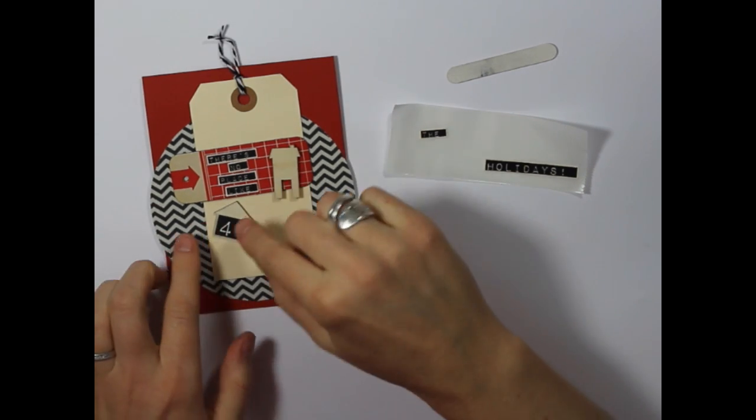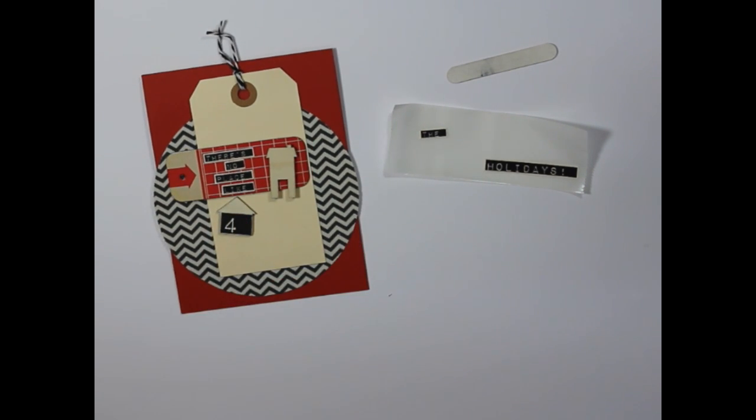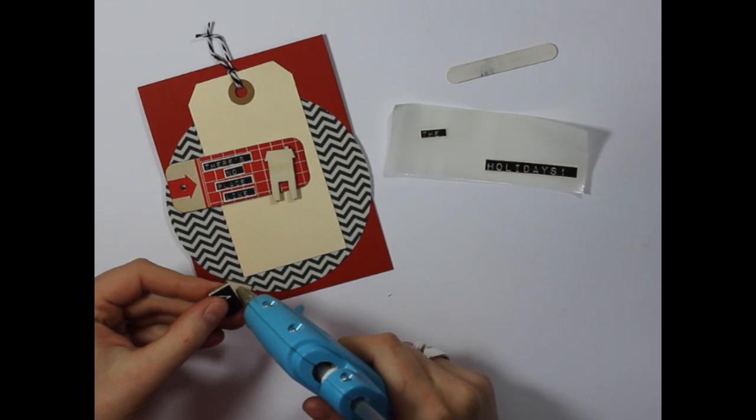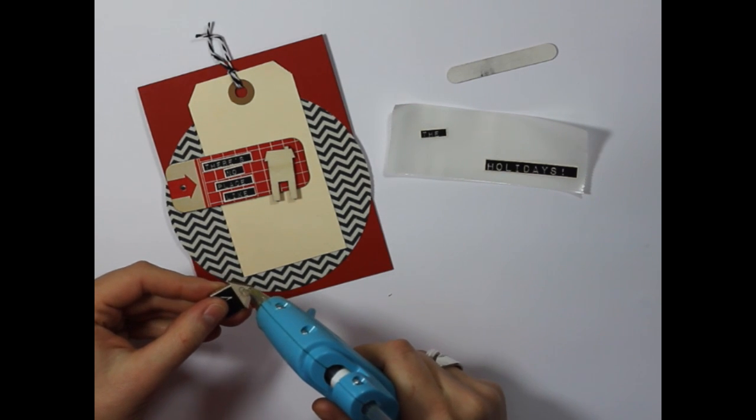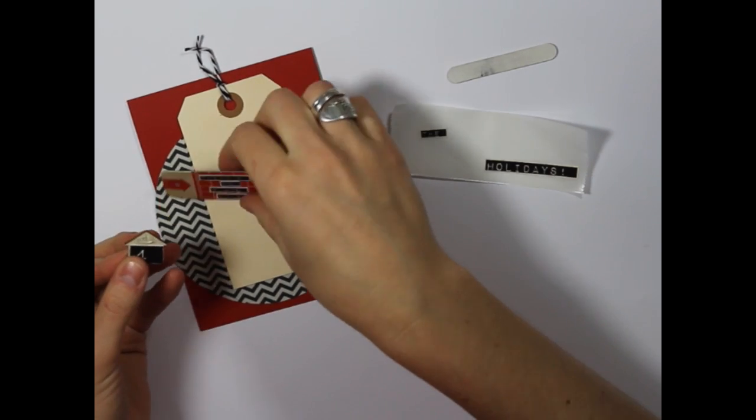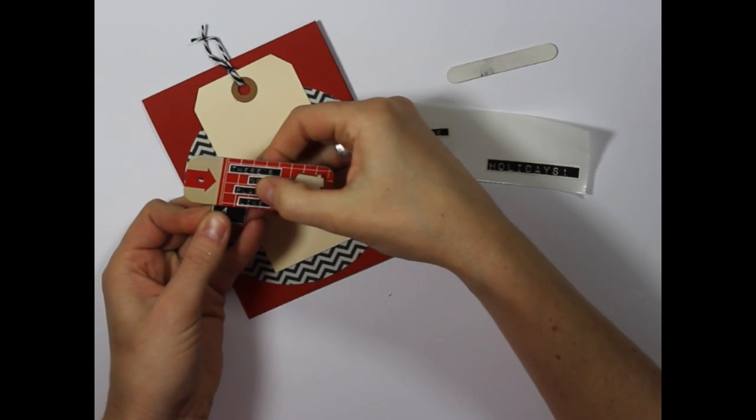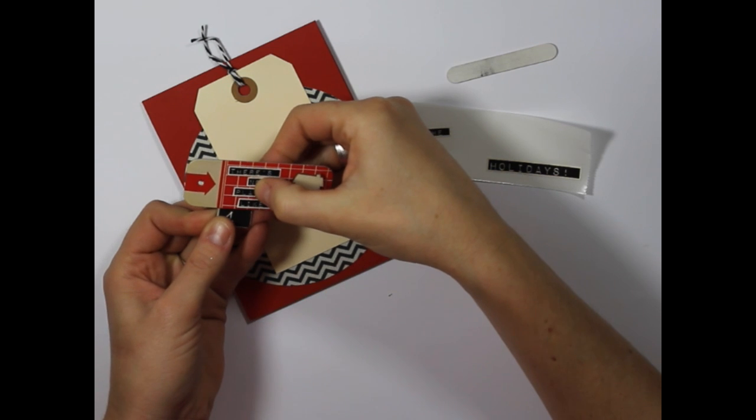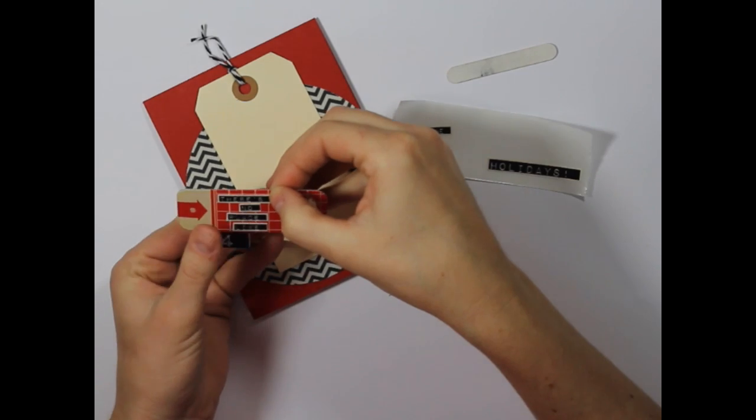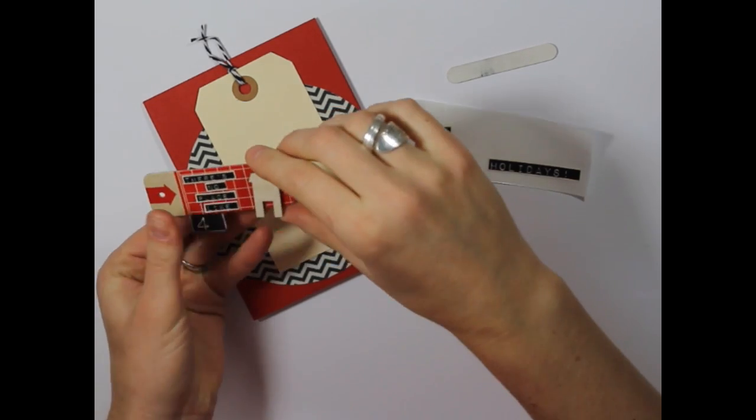So now what I want to do is adhere the number four onto the back of our tag. I'm just going to place a little bit more glue on the roof here. And I'm just going to place that on the back side of our tag, covering up the roof. So now you no longer see the roof portion.